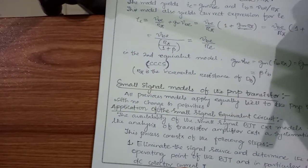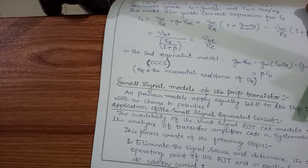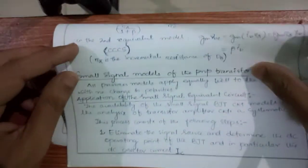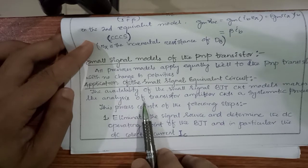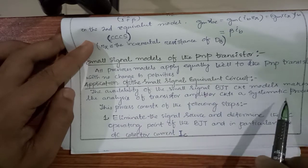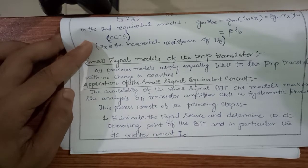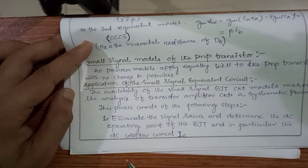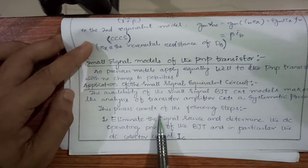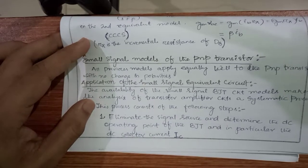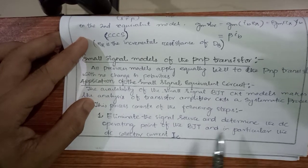Now we will see the application of a small signal equivalent circuit model — how small signal analysis is done numerically. There are five systematic steps. The availability of the small signal BJT circuit model makes the analysis of transistor application circuits a systematic process. The first step is to eliminate the signal source and determine the DC operating point of the BJT, in particular the DC collector current I_C.